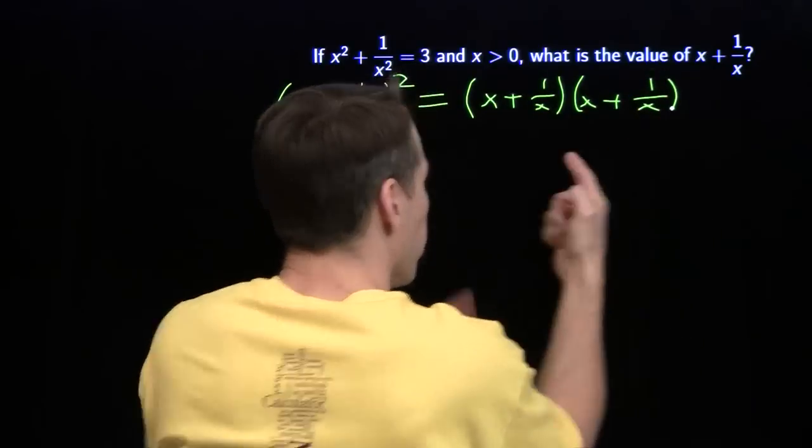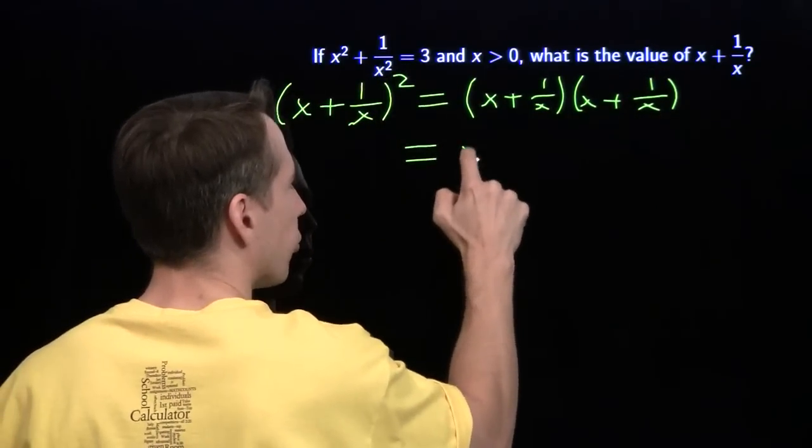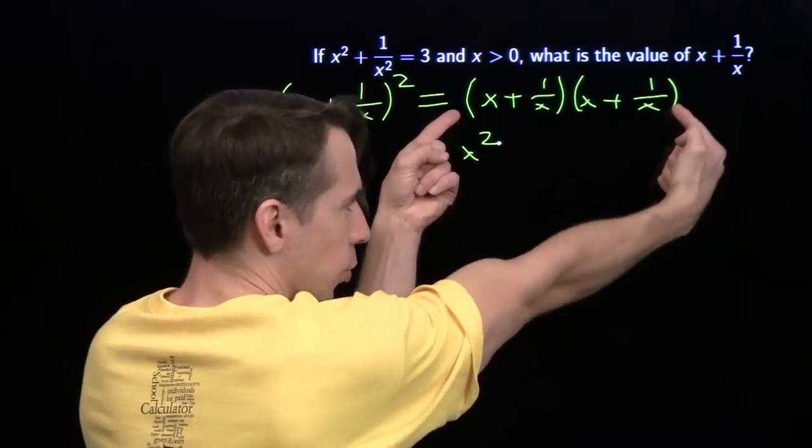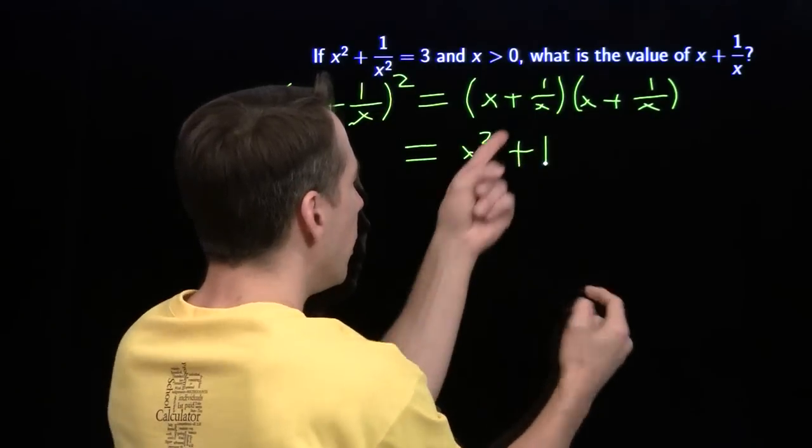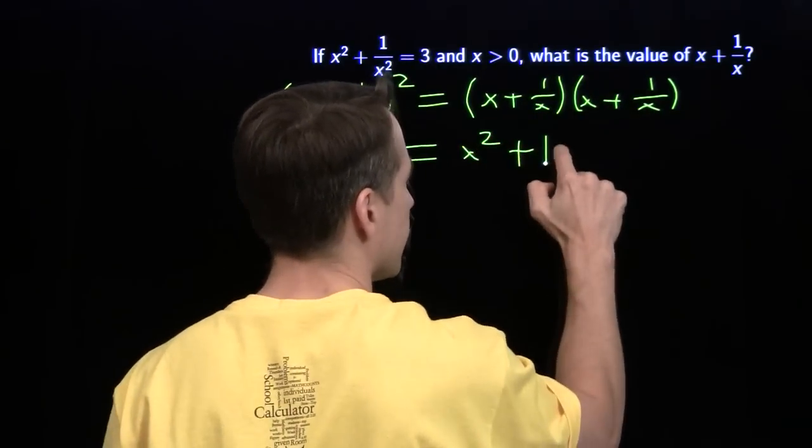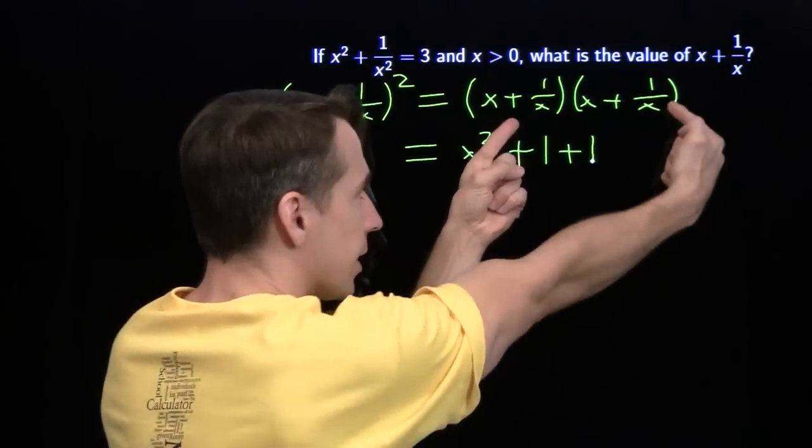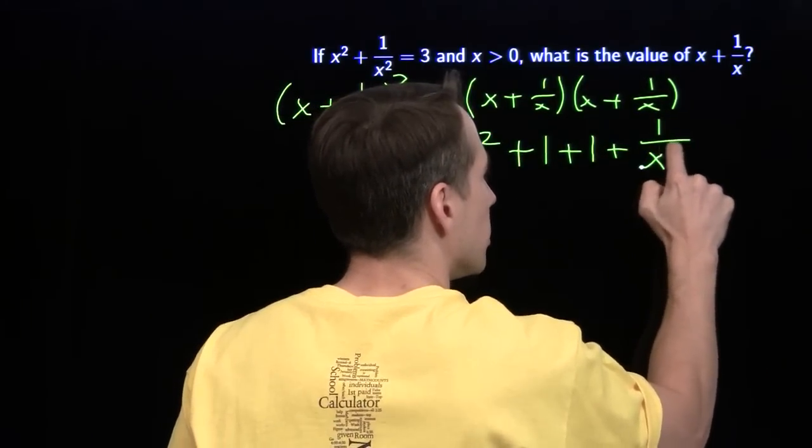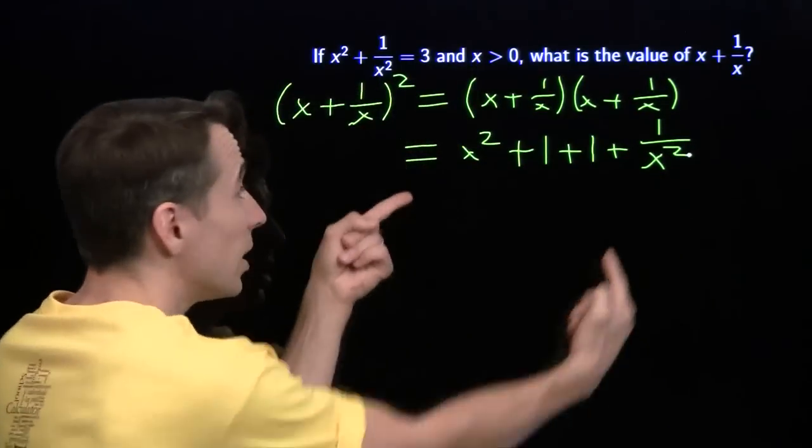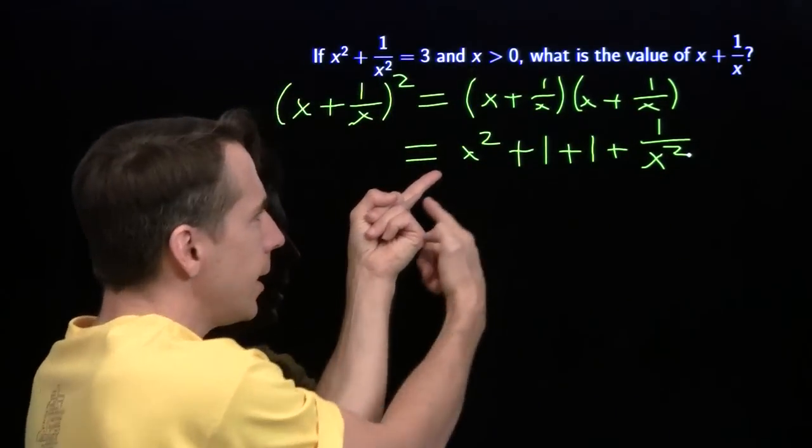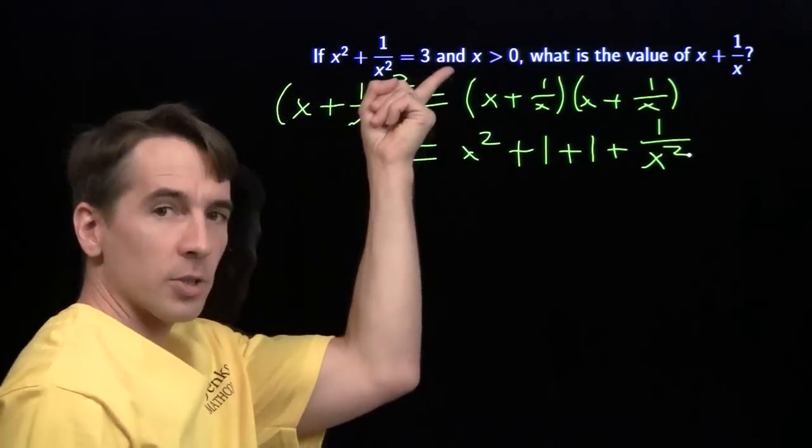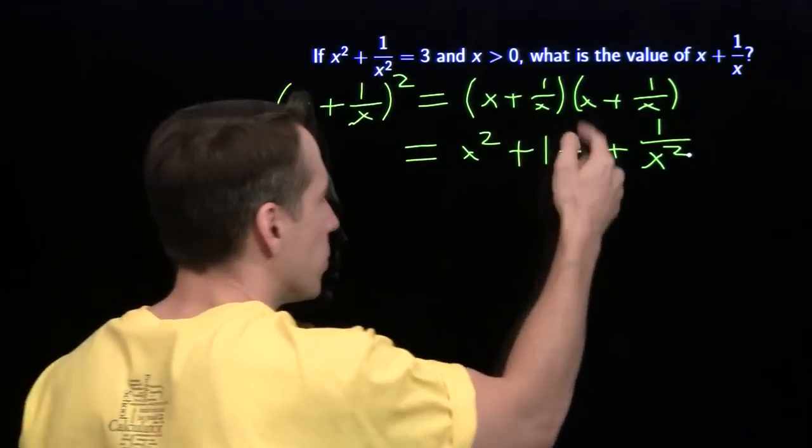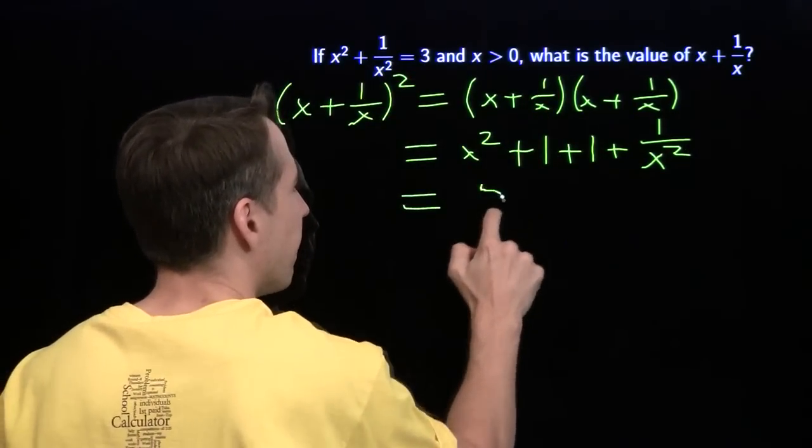Multiply the two x's, we get x squared, as planned. X times 1 over x, we get a 1. 1 over x times x gives us another 1. 1 over x times 1 over x, as planned again, we get 1 over x squared, and we see what we know sitting right there. x squared plus 1 over x squared, that's 3. 3 plus 1 plus 1, add on those extra ones, we get 5.